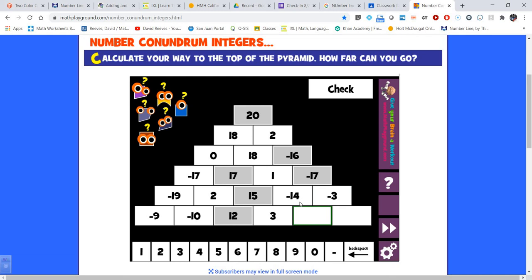What do I add to 3 that will give me negative 14? It's gonna have to be a negative number. Let's see, what would be 3 bigger? How about negative 17? And finally, what do I add to negative 17 that will give me negative 3? That would be 14. And there we go.